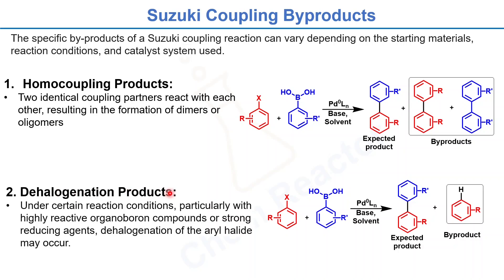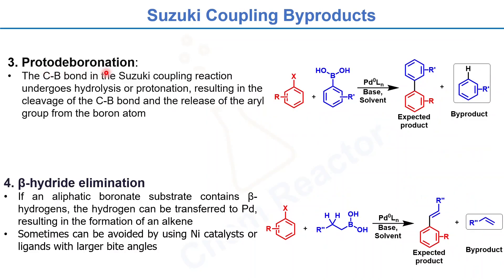The second byproduct is dehalogenation products. Under certain conditions, particularly with highly reactive organoboron compounds or strong reducing agents, dehalogenation of the aryl coupling partner occurs and you can get these types of dehalogenated byproducts.